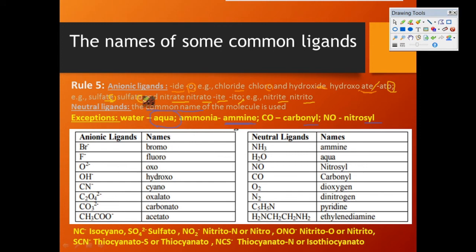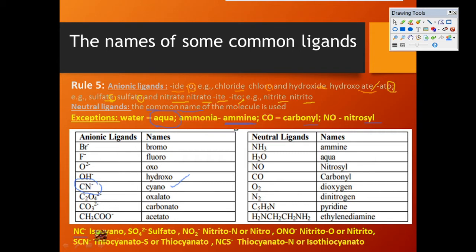In the tabular column, examples are given for both anionic and neutral ligands. For CN⁻, it is named 'cyano' when nitrogen is the donor atom. However, if carbon is the donor atom, it is written as NC⁻, which is named 'isocyano'.